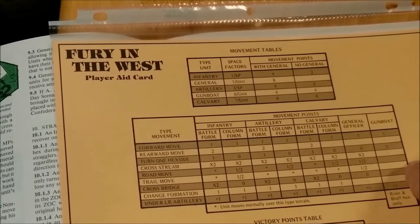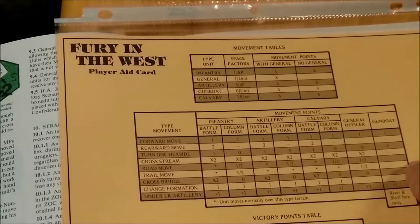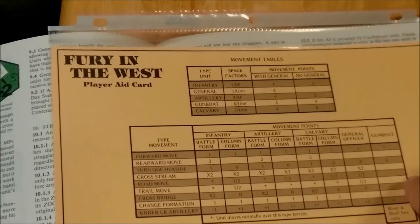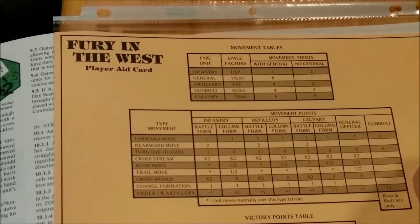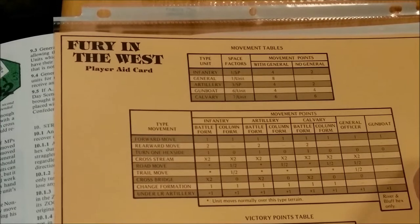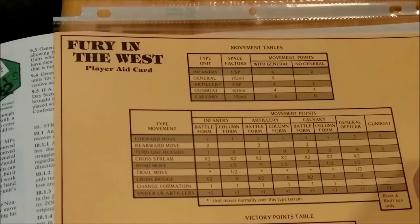Movement points, you can see the different types of units: Infantry, Artillery, Cavalry, Officers, and Gun Boats. And the different type of movement they can make. Like a forward move, a rearward move, turn a hex side, cross a stream, and how much movement points it costs to do that.